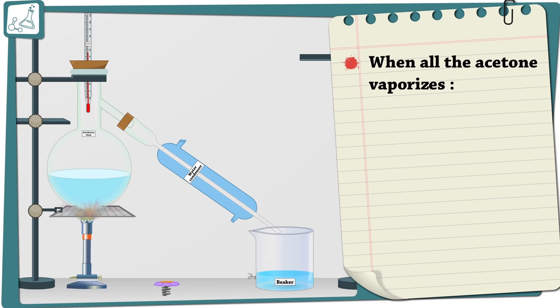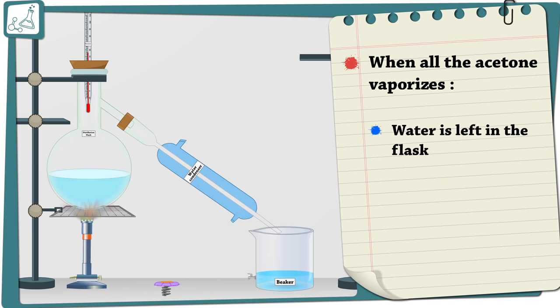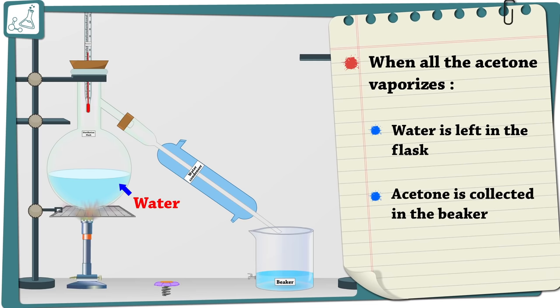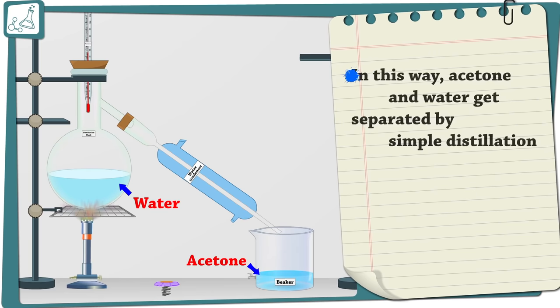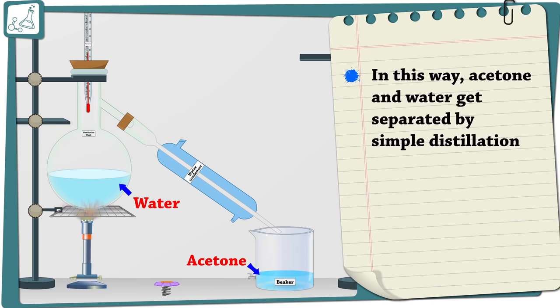When all the acetone vaporizes, water is left in the flask. Acetone is collected in the beaker. In this way, acetone and water get separated by simple distillation.